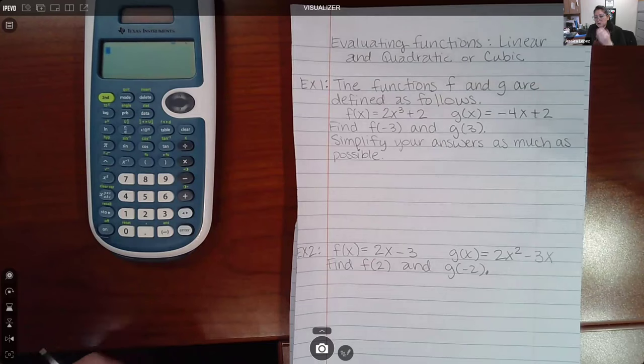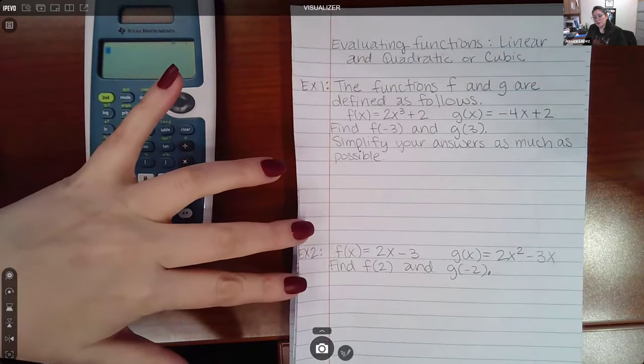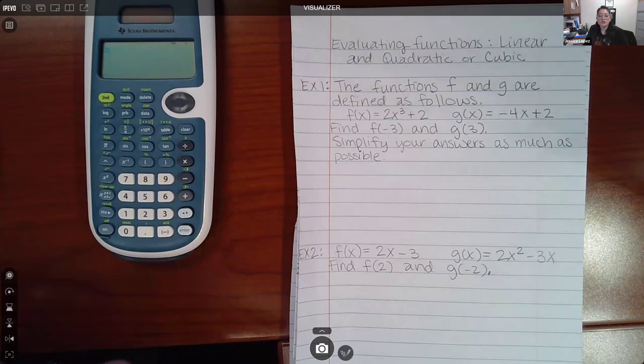So this is what the problem will look like. I went ahead and did two of them. I didn't recreate the directions for both. I just rewrote the new functions and the new values that they're asking you to find. But the directions are the same.